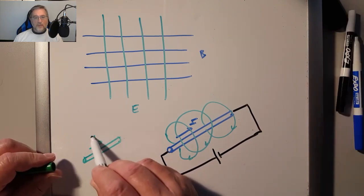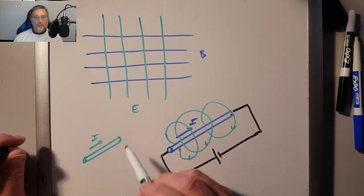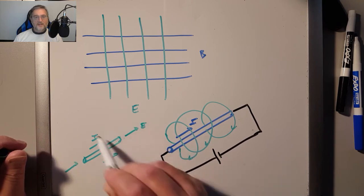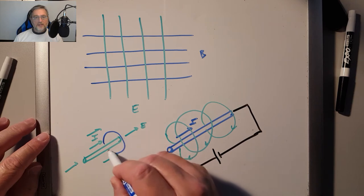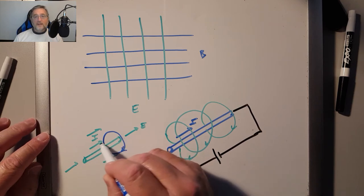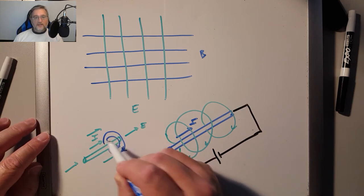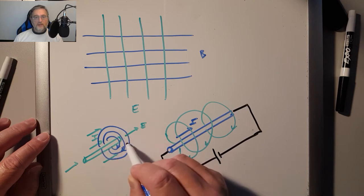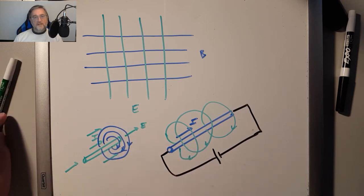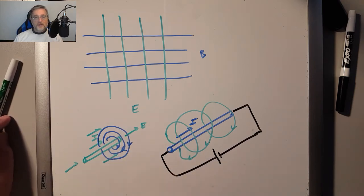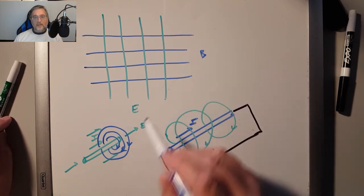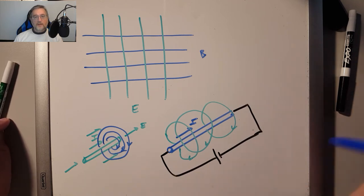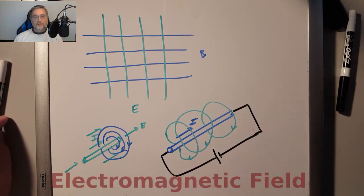If I generate a variable current in a wire, a variable electric field will be present on the wire and its surroundings. As a result, a variable magnetic field will be generated in the same volume of space. In fact, whenever there is a variable electric field, there is also a corresponding variable magnetic field, and vice versa. Each of the two variable fields cannot exist without the other — they always both exist at the same time. It is for this reason that we usually refer to them as a single field, called the electromagnetic field.